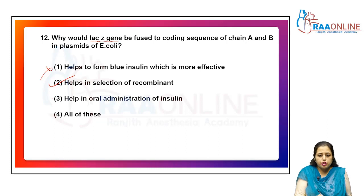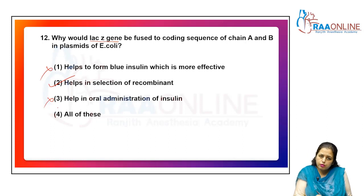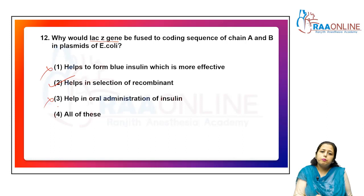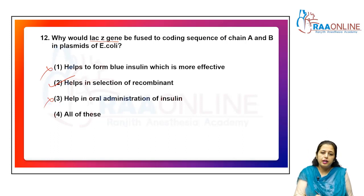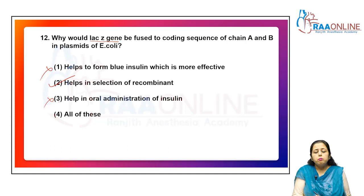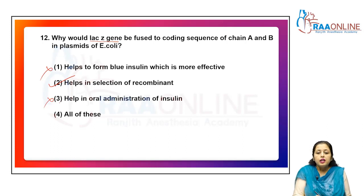Insulin cannot be administered orally because insulin is a peptide — a proteinaceous structure. In our stomach, protein-digesting proteolytic enzymes like pepsin and renin are present. Pepsin is the strongest endopeptidase because it can break the bonds between tyrosine, tryptophan, and methionine, which are typical amino acids. That is why we cannot ingest insulin orally.